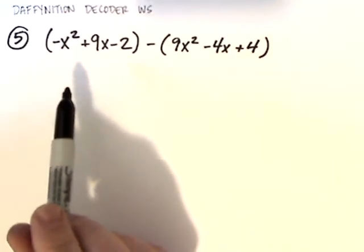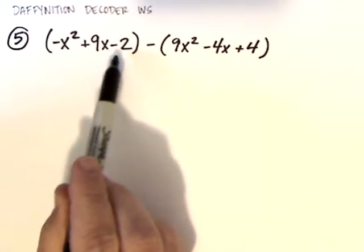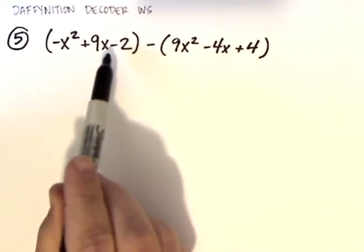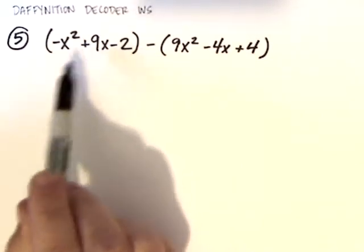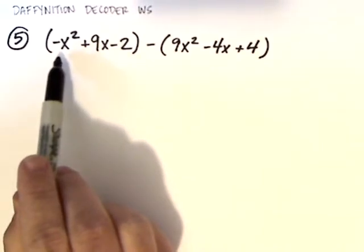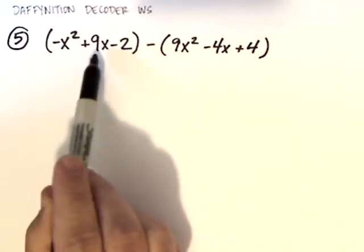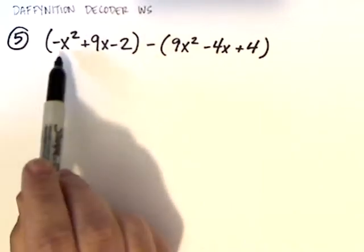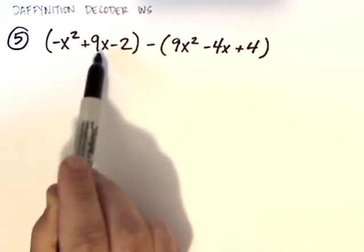Remember, a polynomial is a bunch of monomials that are stuck together with pluses and minuses. As you can see here, inside this first set of parentheses, I have three different monomials: negative x squared, 9x, and 2.